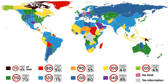A road speed limit is the limit of speed allowed by law for road vehicles, usually the maximum speed allowed. Occasionally, there is a minimum speed limit. Speed limits are commonly set by the legislative bodies of national or local governments.